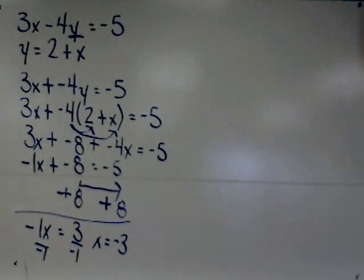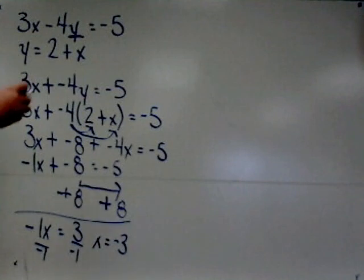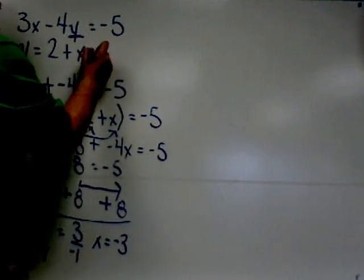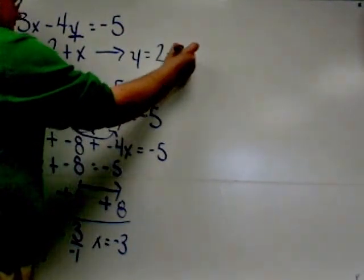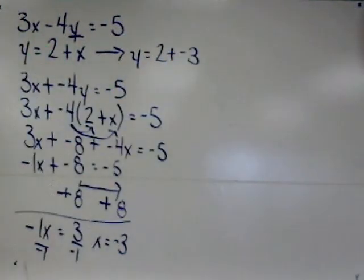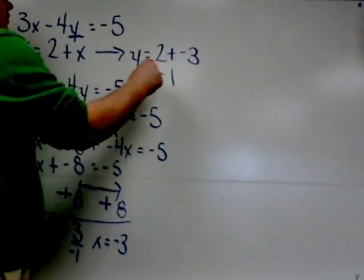Now I'm going to return to the top of the problem and pick the shortest-looking original equation. I'm going to choose y equals 2 plus x because it certainly looks shorter. I'm going to need to change x into negative 3. So y equals 2 plus x becomes y equals 2 plus negative 3. 2 plus negative 3 simplifies to make negative 1 and is thus the value of y.